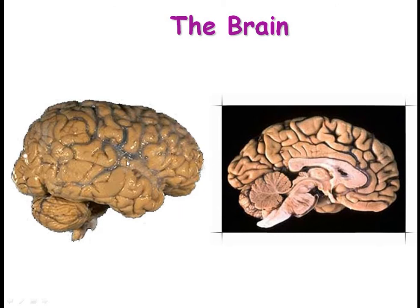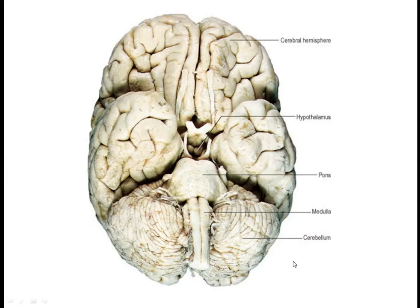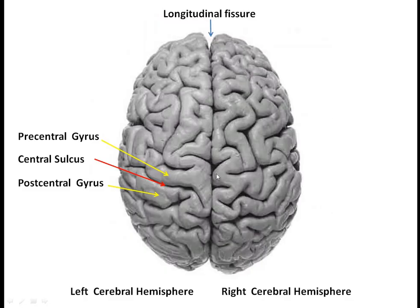Looking at the brain externally, this is the structure of the human brain. Here you can find the meninges, the covering of the brain. This is the inferior view and this is the superior view. Superiorly, the cerebrum is divided into two hemispheres — the left and right cerebral hemispheres. Within each hemisphere, there are raised portions called gyri and depressions called sulci. Deep sulci are called fissures. The longitudinal fissure divides the cerebral cortex into the right and left cerebral hemispheres.